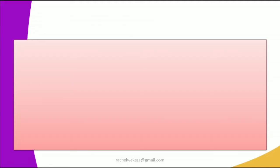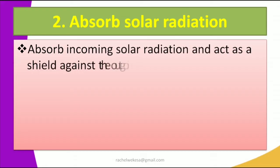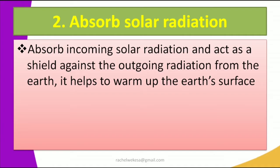The other significance of carbon dioxide is that it absorbs solar radiation — the amount of heat energy gotten from the sun. The incoming solar radiation is absorbed and it acts as a shield against the outgoing radiation from the Earth. The carbon dioxide in the atmosphere absorbs some of this incoming radiation and protects us against outgoing radiation, helping to keep the Earth warm and warming up the Earth's surface.